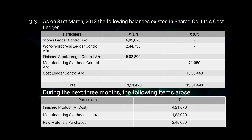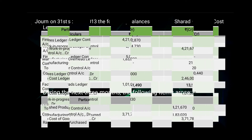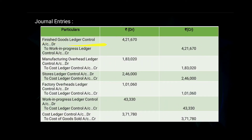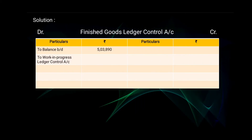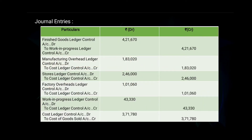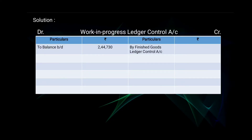Now let us record the expenses. The first expense is finished product at cost — 4 lakh 21,670. The first effect is given in Finished Goods Ledger Control Account as 'to Work in Progress Ledger Control Account — 4 lakh 21,670.' The second effect is given in Work in Progress Ledger Control Account as 'by Finished Goods Ledger Control Account — 4 lakh 21,670.'